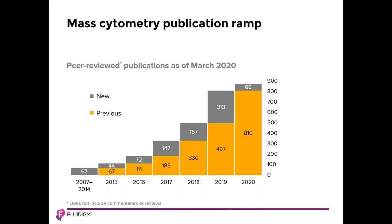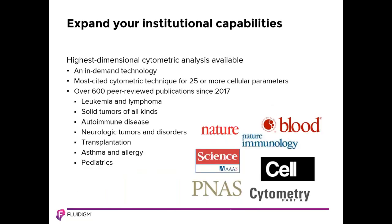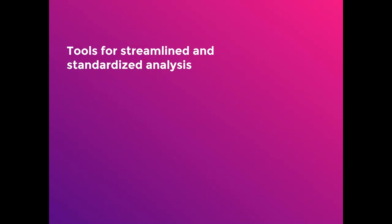Since CyTOF instruments were sold in 2008, over 800 peer-reviewed papers — not including reviews — have been published featuring significant use of mass cytometry or introducing analysis methods applied to mass cytometry data. Mass cytometry is the way to immediately expand your institutional cytometric capabilities to 40 or more parameters. There are publications and protocols that cover research into all areas of disease, and the technology is applicable to every area of medical research. In the next section, I will discuss the tools that Fluidigm provides for streamlined and standardized analysis using mass cytometry.